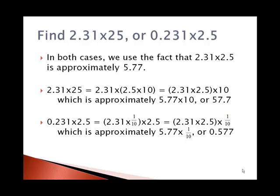Similarly with .231, we can take that and say it's 2.31 times a tenth, use commutative and associative properties to find those numbers that we've already found and say it's 5.77 times one tenth or .577.